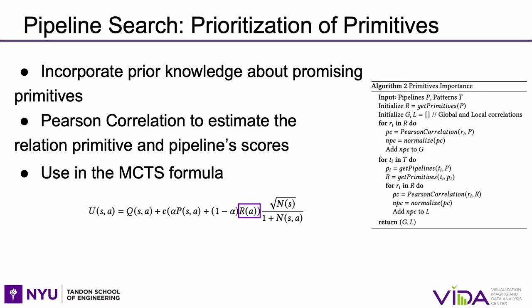In real-world scenarios, when a data scientist builds a machine learning pipeline, they start with primitives known to perform well — for example, XGBoost or Random Forest are good initial candidates for classification tasks. AlphaD3M uses this intuition to identify good candidate primitives for specific tasks using data from Marvin. Incorporating this prior knowledge about promising primitives could help find better pipelines. AlphaD3M uses Pearson correlation to estimate how much a primitive contributes to the score of a pipeline, and includes these primitive importance values in the Monte Carlo Tree Search formula.